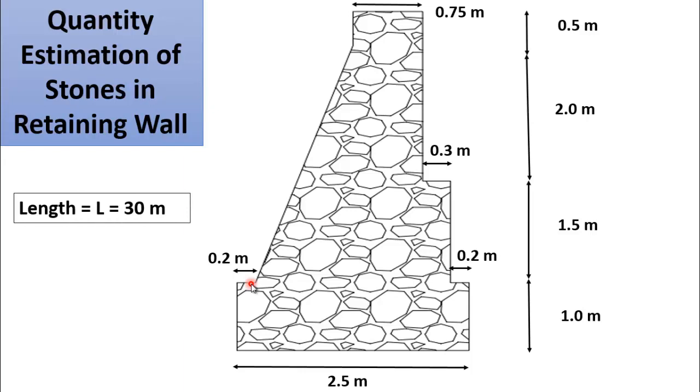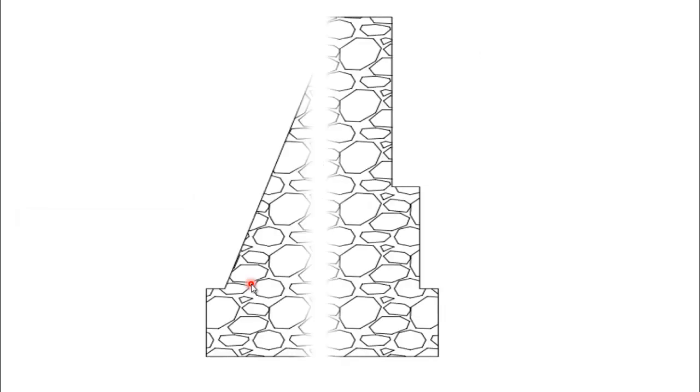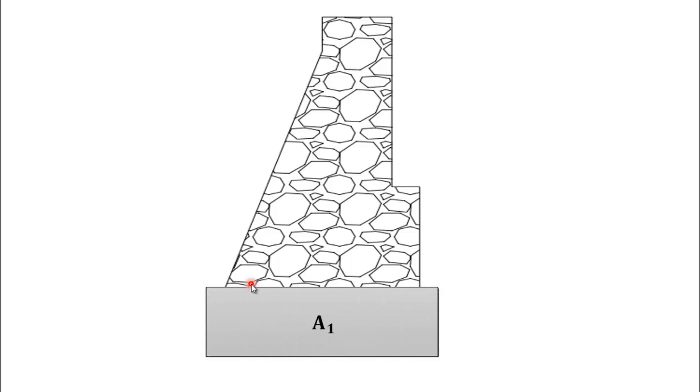The length of the retaining wall is 30 meter. Now to find out the total quantity of stone required for this retaining wall, first we have to determine the cross-sectional area of the retaining wall. As you can see that the cross-section is a composite one and it includes different regular shapes. So first we will divide the cross-section of the retaining wall into regular shapes.